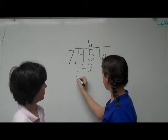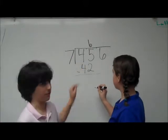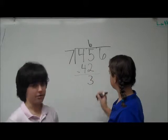So now let's do 45 minus 42, because 7 times 6 equals 42. Then you'll get 3.